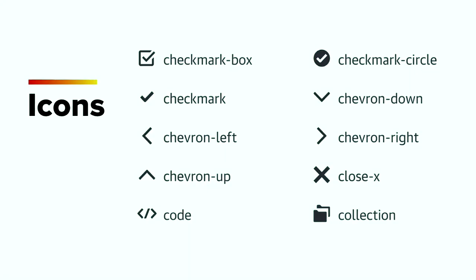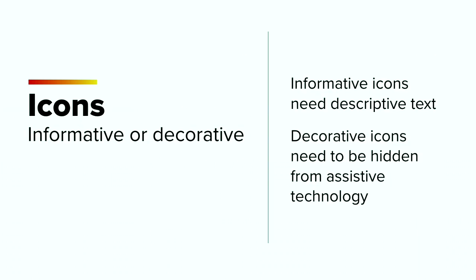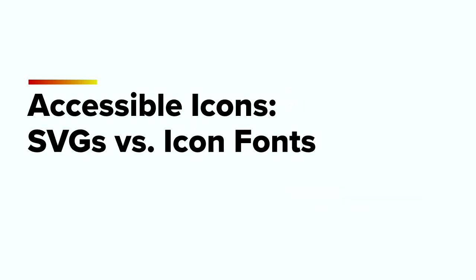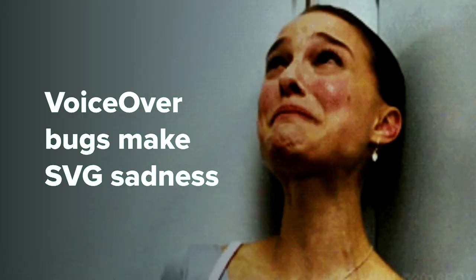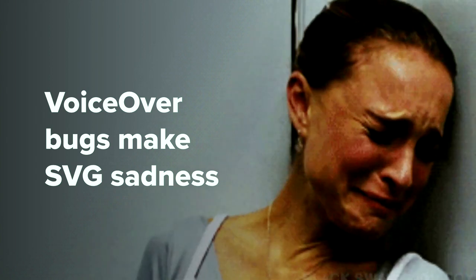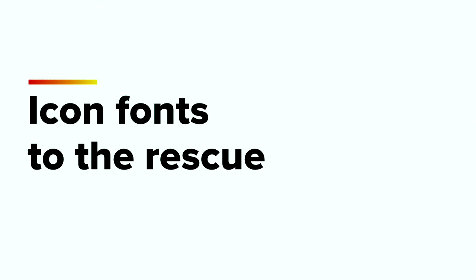Let's take these principles and apply them to some components, starting with icons. Icons are a great way to add a bit of flourish to your product — they're used to supplement key messaging and call attention to areas of importance. Icons can be either informative or decorative. If the icon is informative, it needs to be paired with descriptive text. If the icon is decorative, it needs to be hidden from assistive technology because it doesn't have any significant value. There are many ways to create accessible icons. The two latest techniques are SVGs versus icon fonts. We tried converting all our icons to SVGs into an SVG sprite sheet and it was glorious — until we tested in VoiceOver on High Sierra and discovered a bug where every single group in that SVG sprite sheet would announce. So as a temporary solution, icon fonts it is.